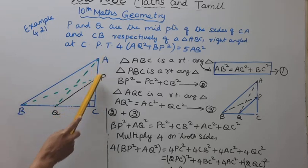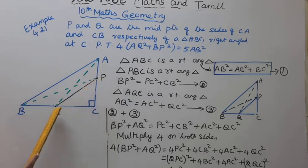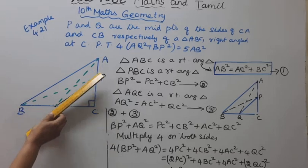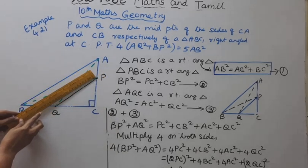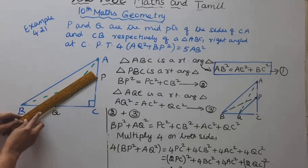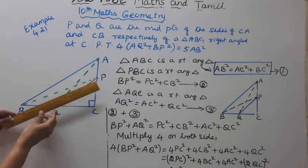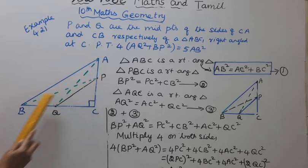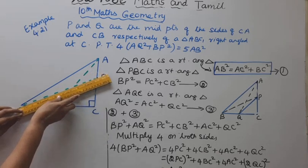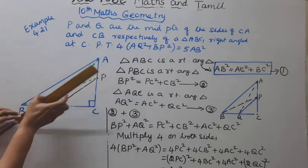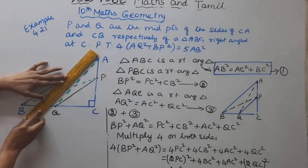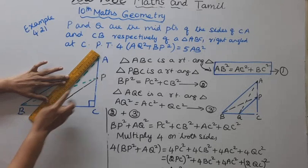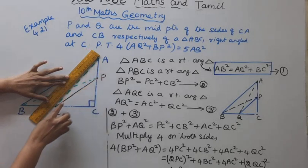P is the midpoint of CA, Q is the midpoint of BC. We join P to B and Q to A with dotted lines in the diagram.